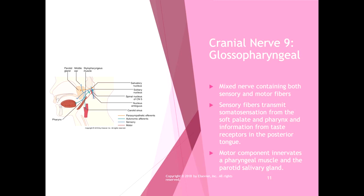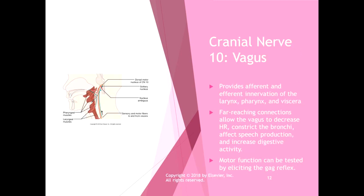Cranial nerve nine is the glossopharyngeal nerve — a mixed nerve containing both sensory and motor fibers. Sensory fibers transmit somatosensation from the soft palate and pharynx, and information from the taste receptors in the posterior tongue. Interestingly, taste receptors in the tongue are divided into anterior and posterior, served by two different nerves. The motor component innervates the pharyngeal muscle and the parotid salivary gland, making it very important in eating and swallowing.